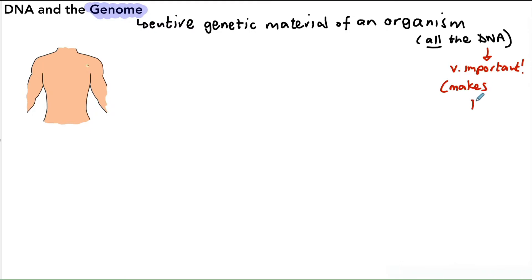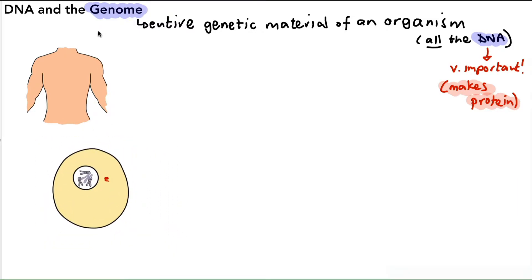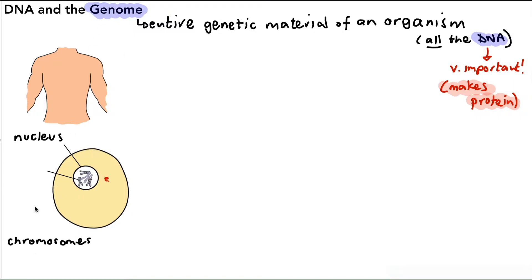DNA controls when to make protein, how to make it, and how much of it to make, and that is how the cell gets its characteristics and how you get all your characteristics. If we were to take a cell from the body and enlarge it, there are a couple of features to describe so we can understand where the DNA is. In the center there is a structure called the nucleus, and inside the nucleus are structures called chromosomes — though they're not there all the time, but during parts of the cell cycle you'll find them there.